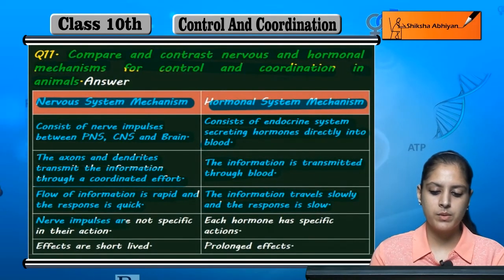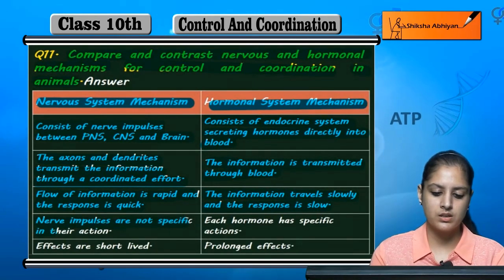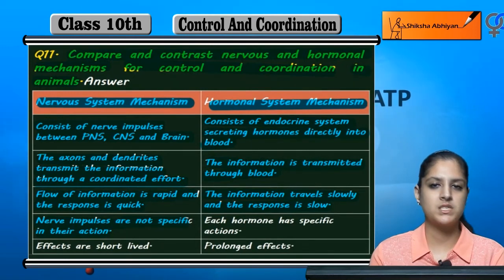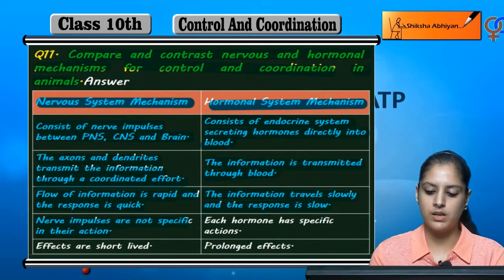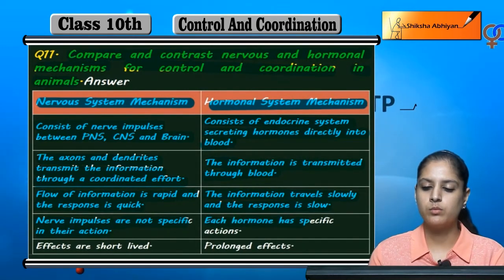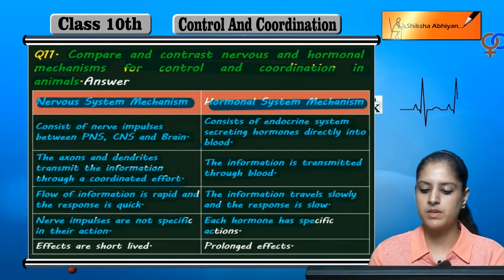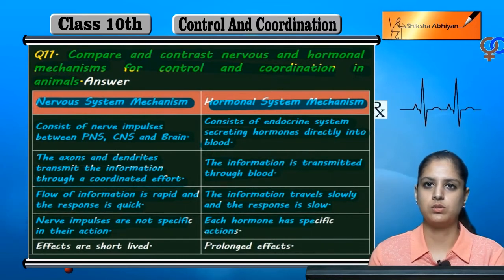In the nervous system, nerve impulses are not specific in their actions. In the endocrine system, however, the hormones have a specific action on target organs.